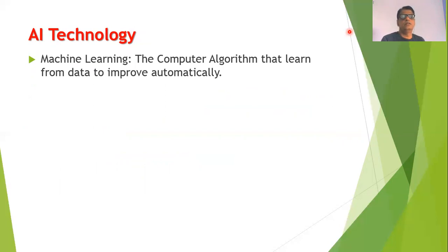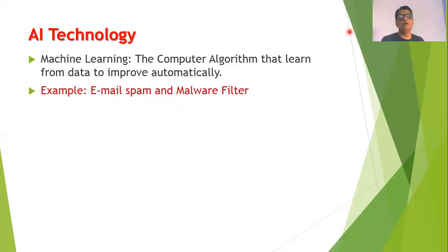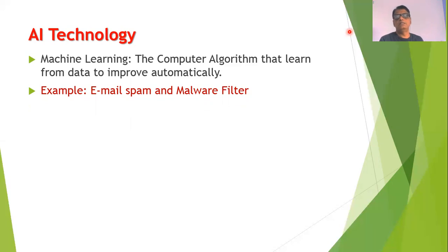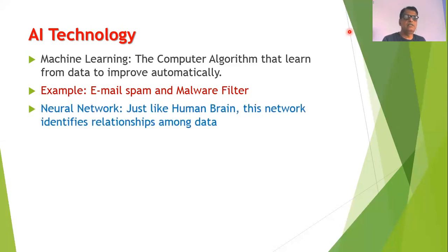There are different forms of AI in existence today. For example, we have a form called machine learning. Machine learning is a kind of computer algorithm that learns from data so that its performance can be improved automatically. A common example of machine learning is the email spam or malware filter. Everybody uses email and there are a lot of unwanted emails, and these can be filtered out using such software — that software is an example of machine learning.